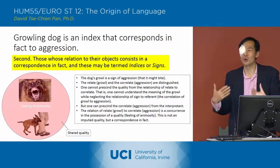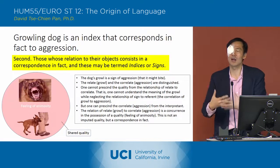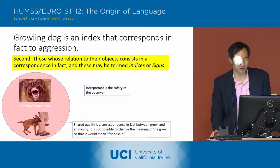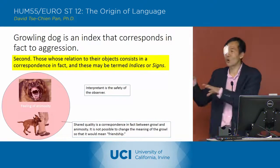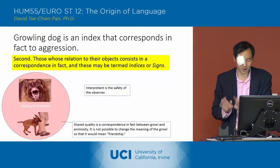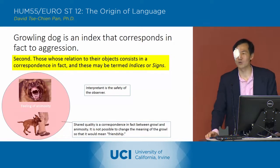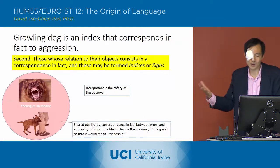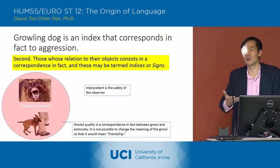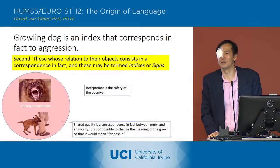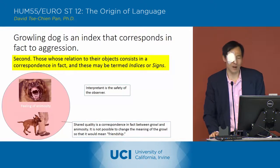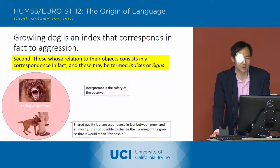The growling and the biting both share the quality of this feeling of animosity, and that shared quality means that the growl can be an index. It's not possible to change the meaning of the growl so that it would mean friendship. The interpretant then is the safety of the observer, who is going to be concerned whether that dog is going to bite, and that's essentially the way the dog is trying to communicate that threat to the observer.